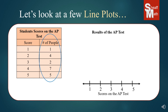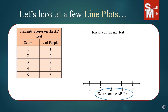Over to the right it shows how many people in that class got the different scores. For instance, one person got a score of one, four people got a score of two, and so on. Over here we have the title of our line plot. Down here we have our labeling of the number line — scores on the AP test — and so that's the left column.